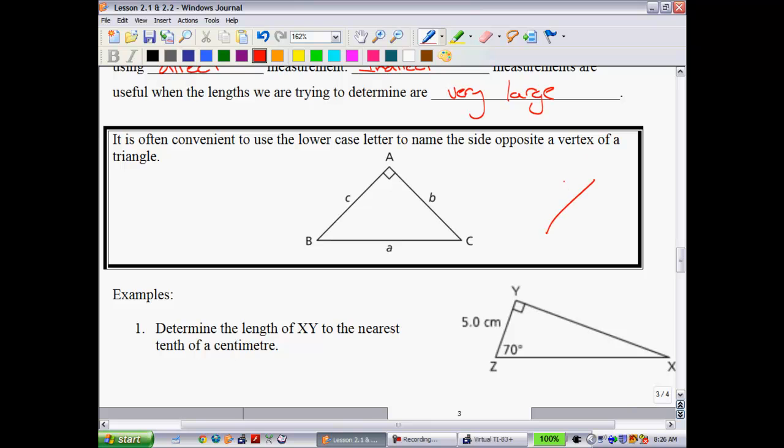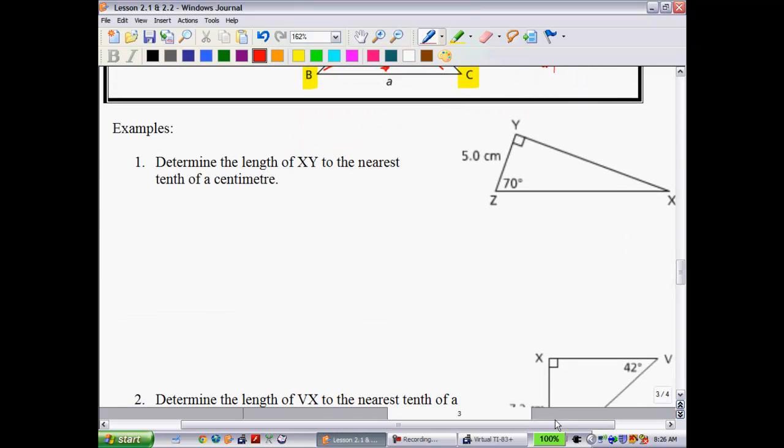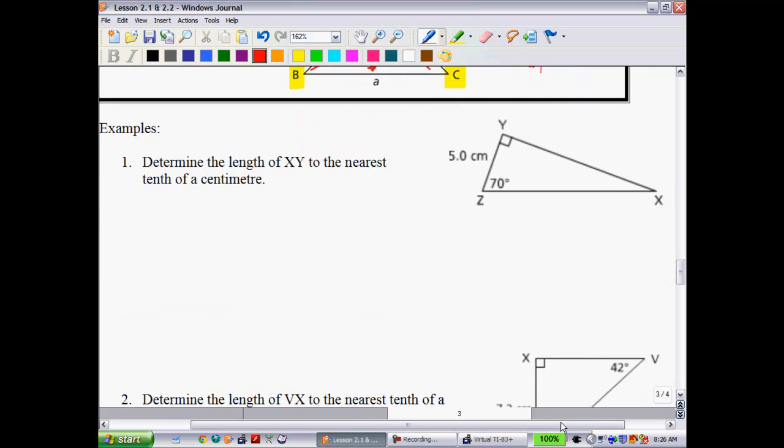I also want to show you this little rectangle I made right here. It is often convenient to use lowercase letters to name the side opposite of a vertex of a triangle. So what I mean here is, let's say we started off with these angles, A, B, C. Well, in order to denote the sides, what we'll do is the sides are always going to be across. So that's little a, that's little b, and little c. So you might find that useful. The textbook often does that. Sometimes we won't, but you'll see. Anyways, determine the length of x.